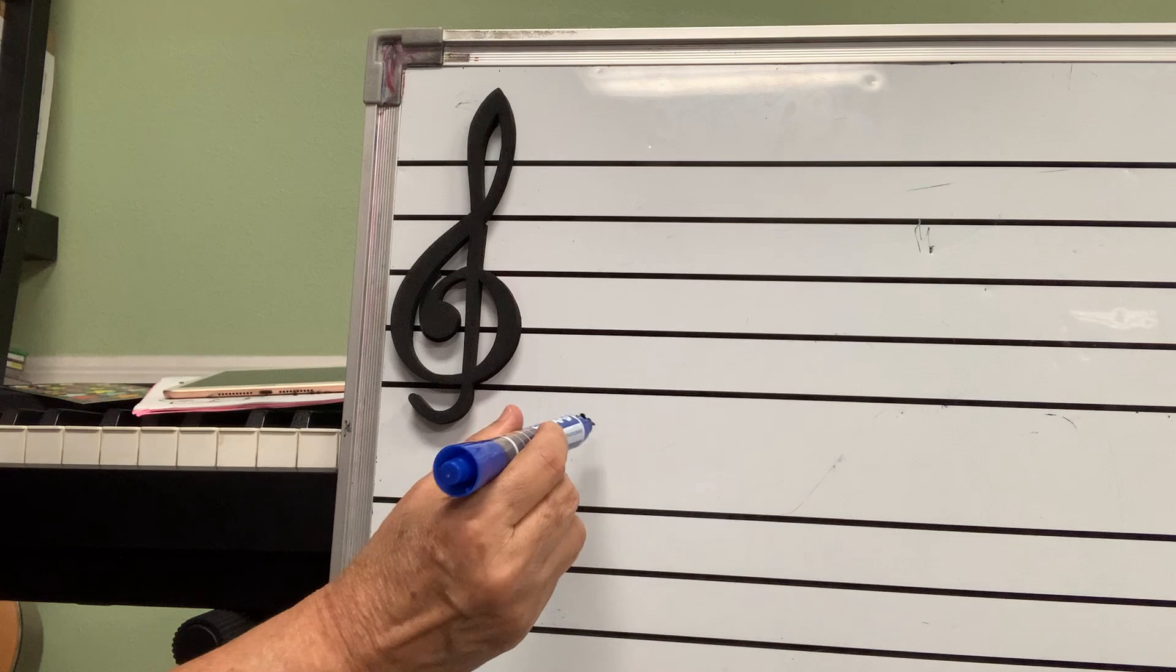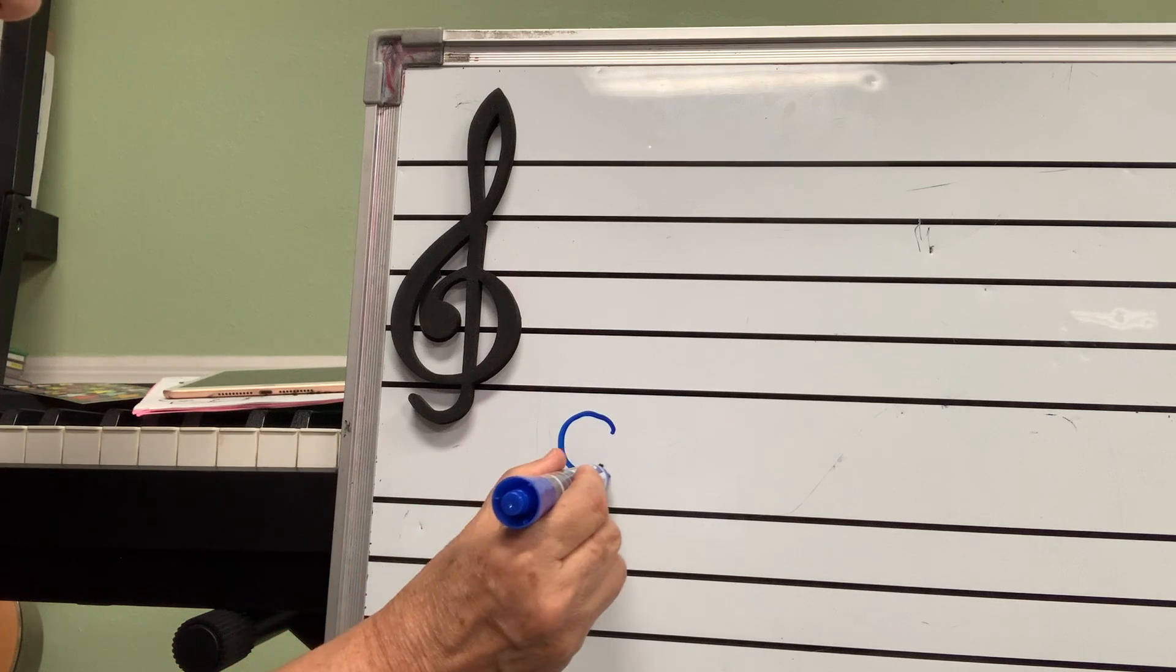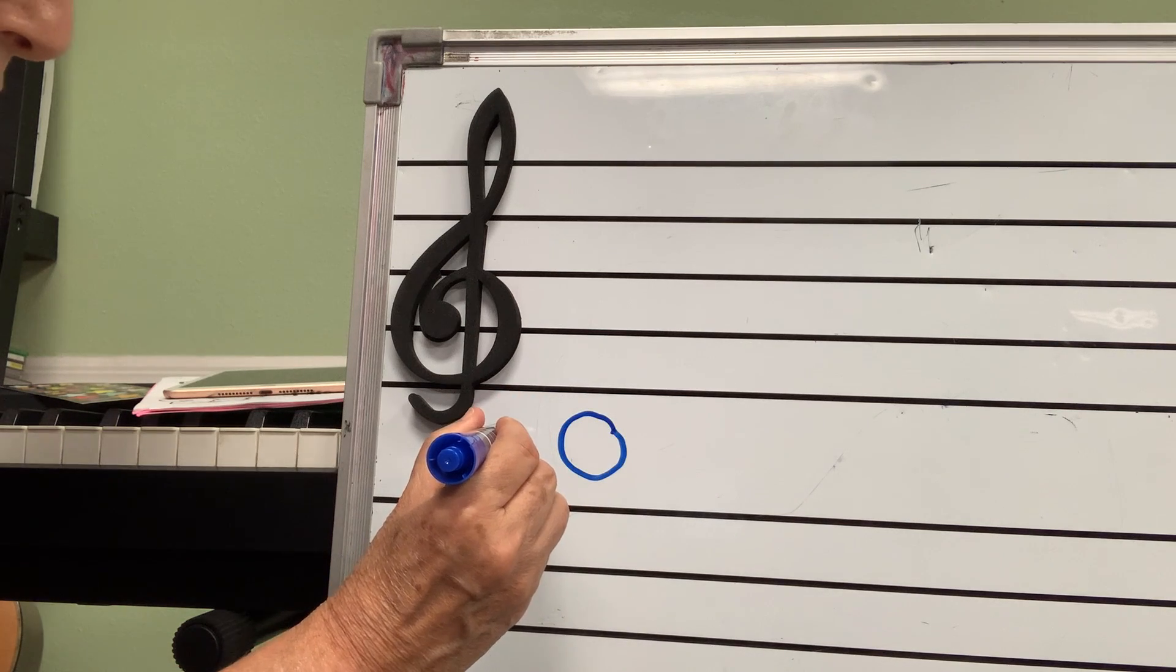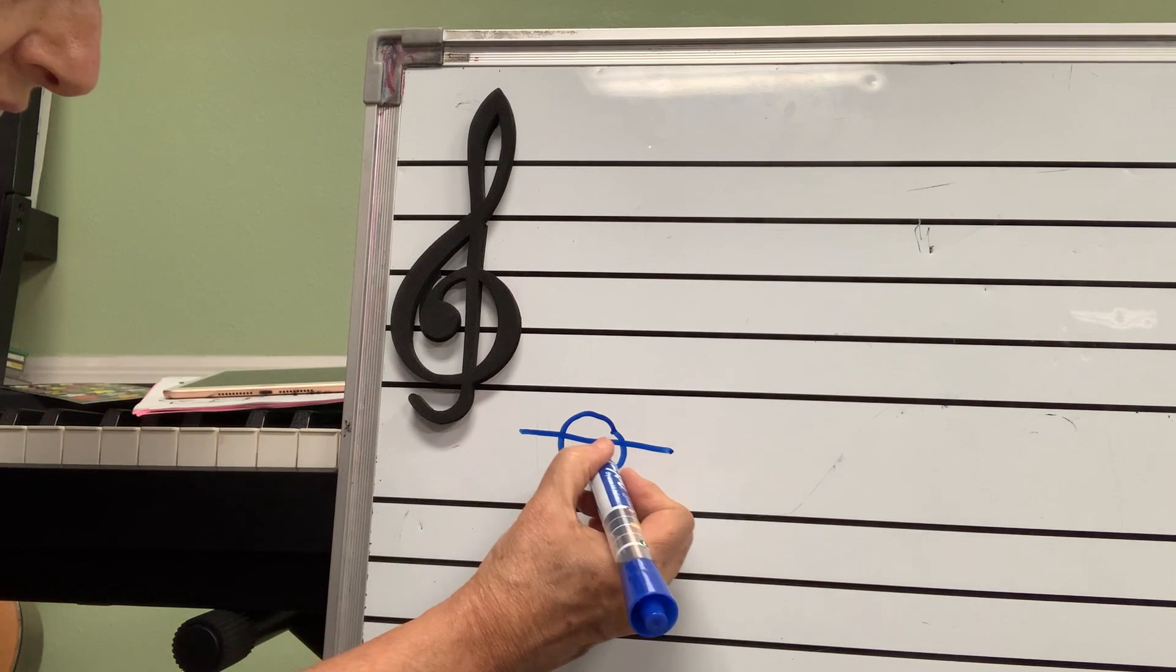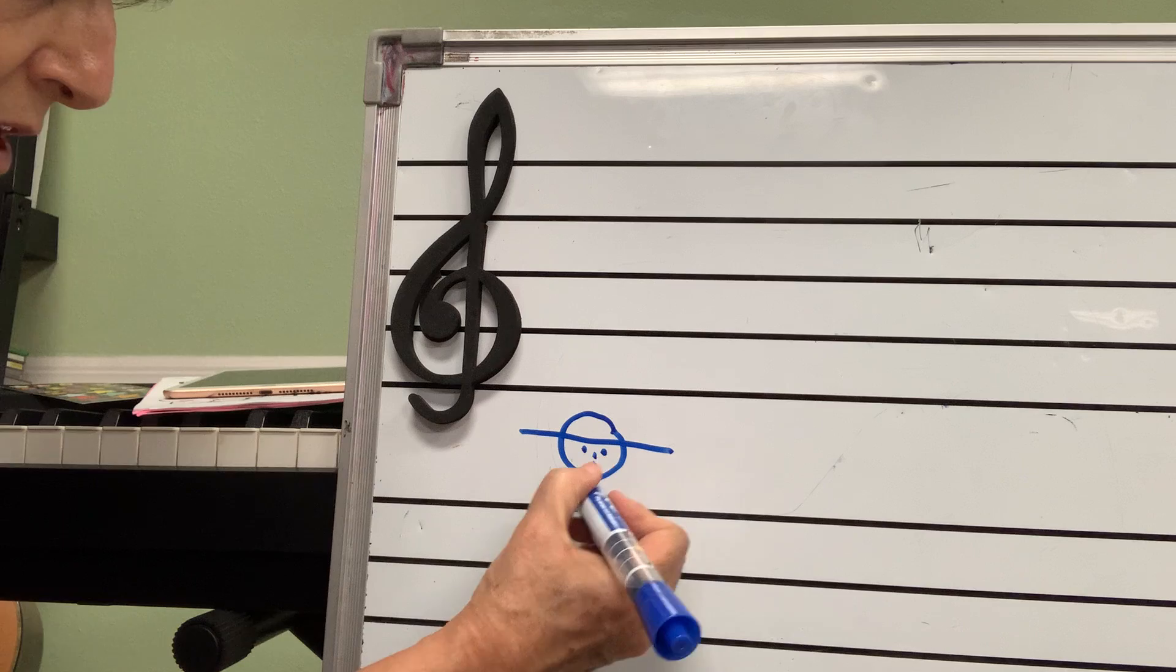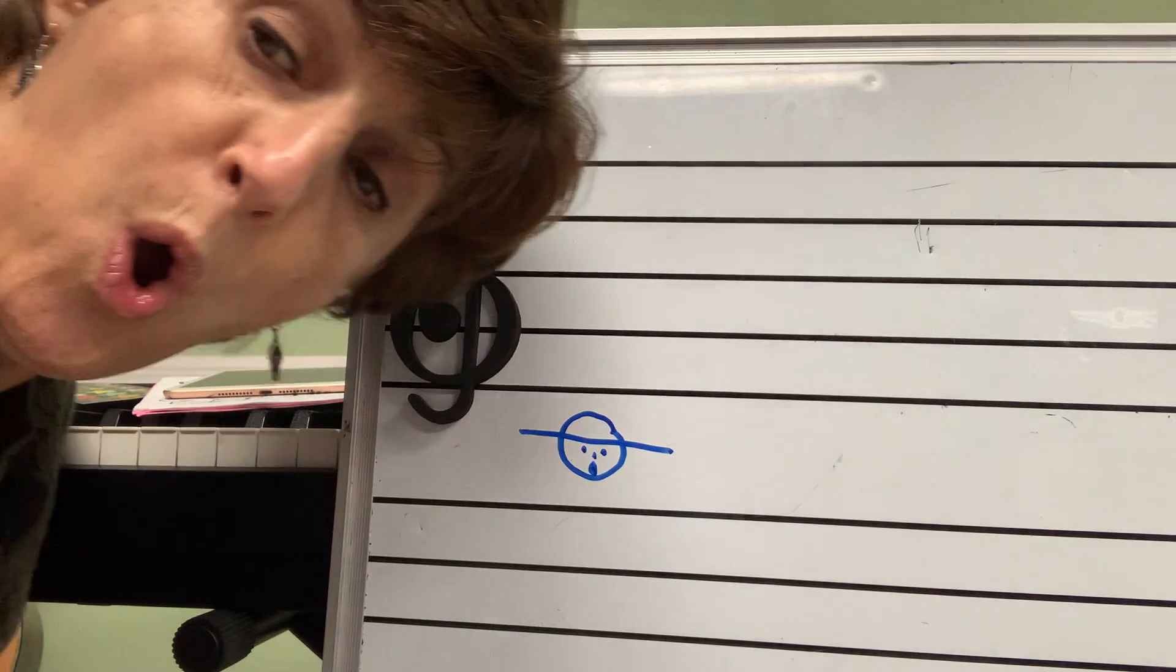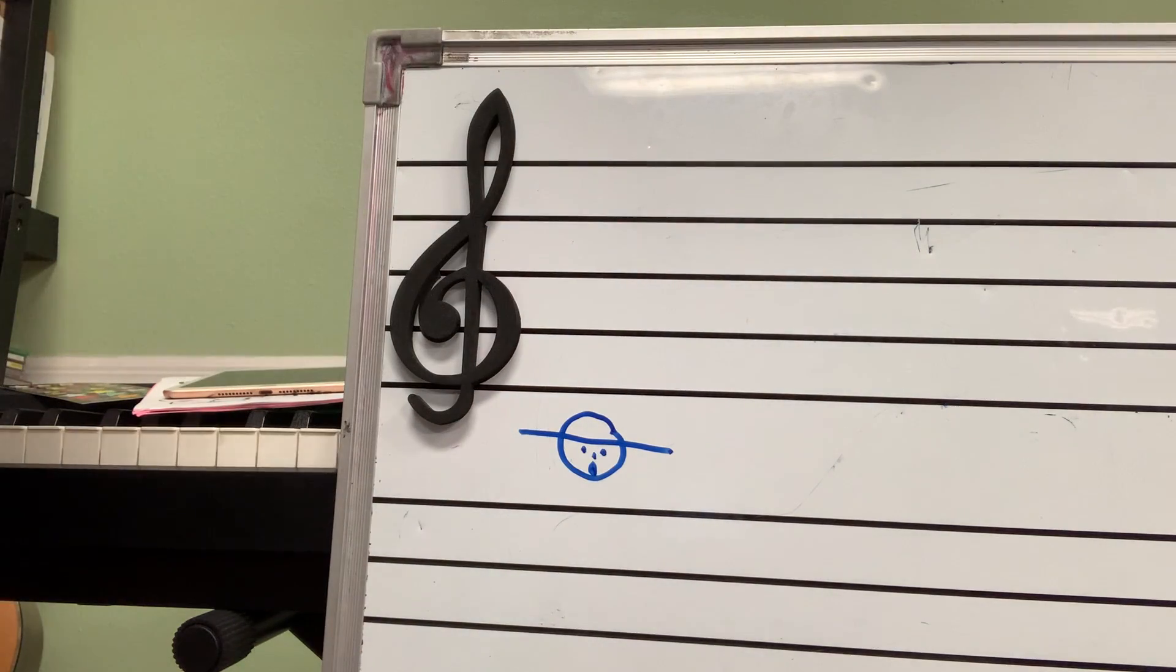Treble clef. Now, the first note lives outside of the lines, and where's the hat? There's his hat. Here are his eyes, his nose, and his mouth, and he's singing, oh, because he always sings.